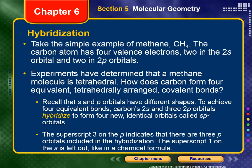S and p orbitals have different shapes. To achieve four equivalent bonds, carbon's 2s and three 2p orbitals hybridize — mixed together and averaged out — to form four new identical orbitals called sp3 orbitals. The superscript 3 on the p indicates that there are three p orbitals included in the hybridization. The superscript 1 on the s is assumed, just like in a chemical formula. So there is one s orbital and three p orbitals mixed together to get four identical sp3 orbitals.